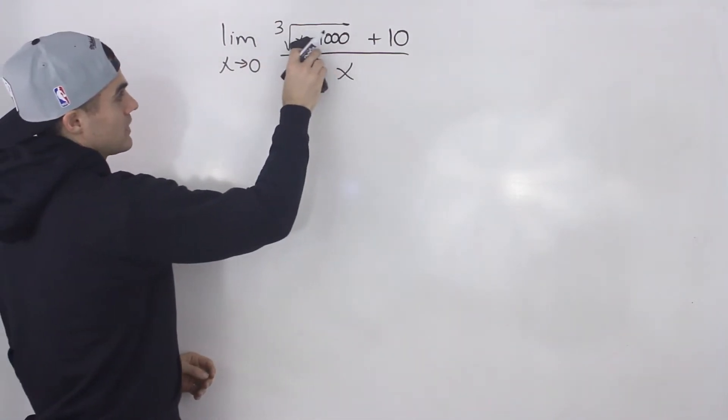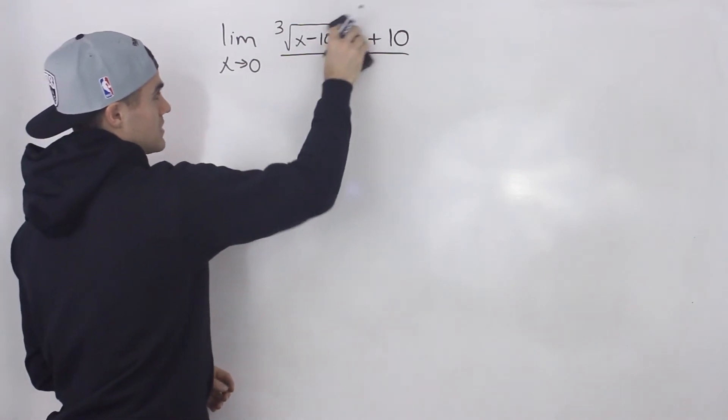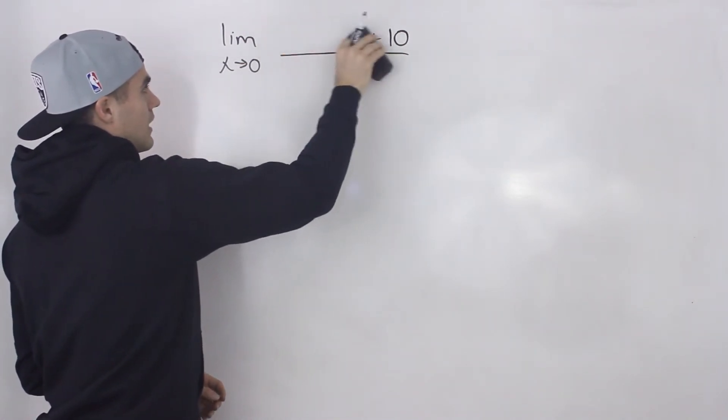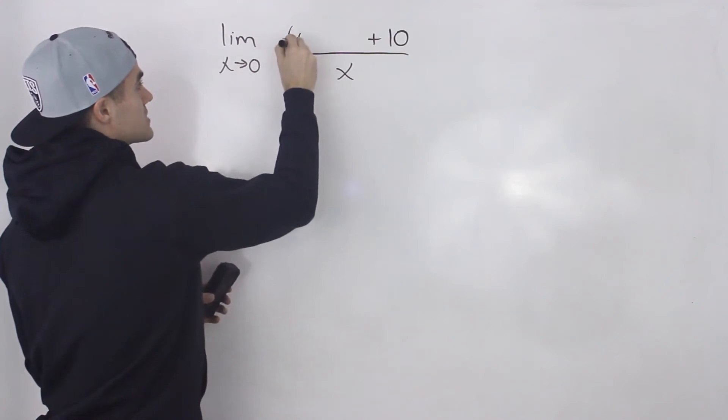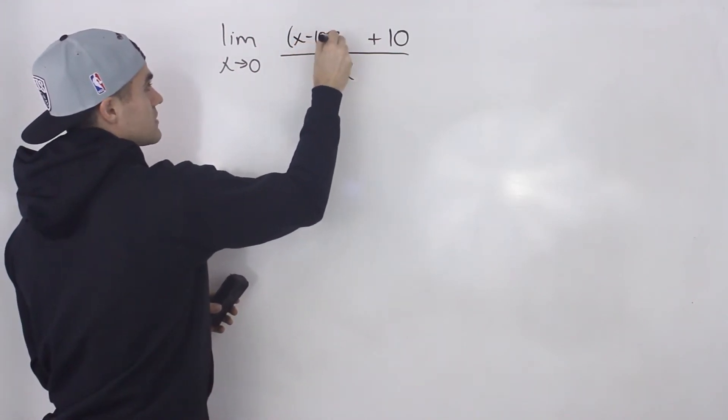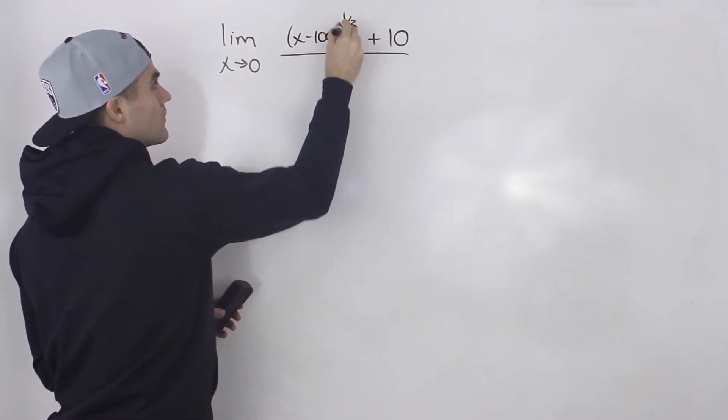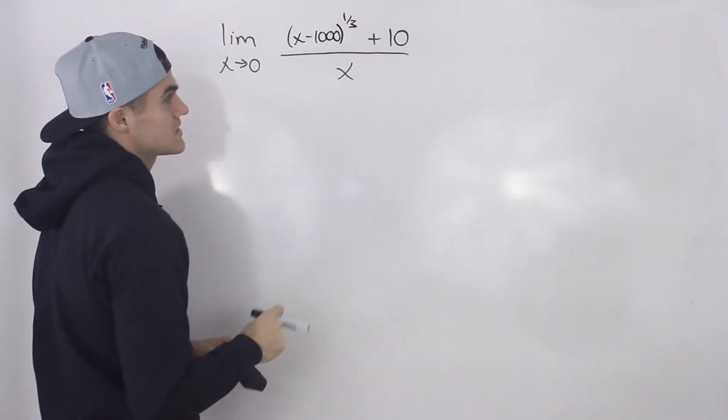Instead of writing the third root of x minus 1,000, I'm going to change this and write it as x minus 1,000 to the power of 1 over 3, which is the same thing.